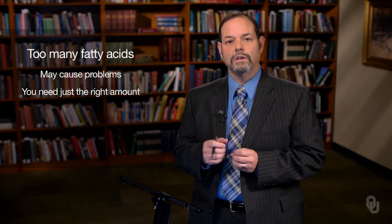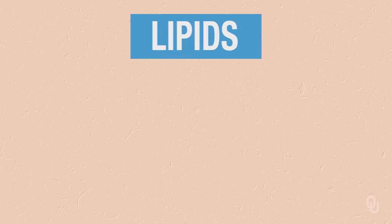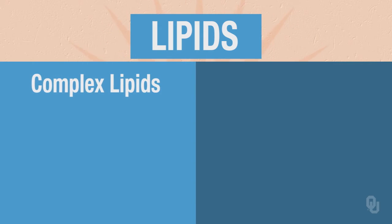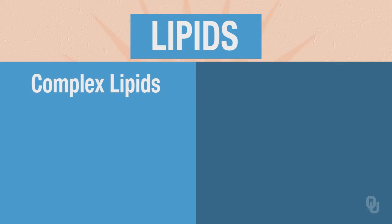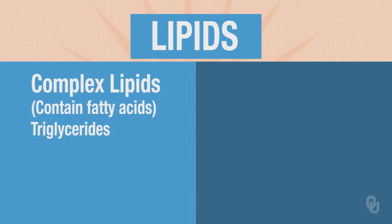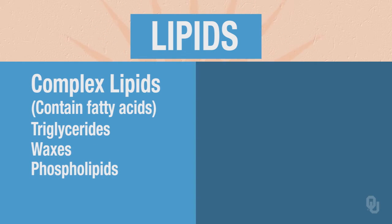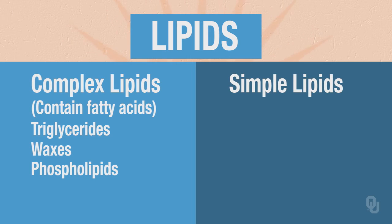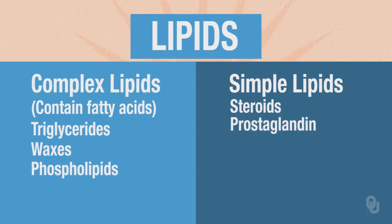So what are lipids? There are two main areas. Complex lipids, which contain fatty acids such as triglycerides, waxes, and phospholipids. We also have simple lipids — these are simple hydrocarbon compounds such as steroids, prostaglandins, and terpenes.